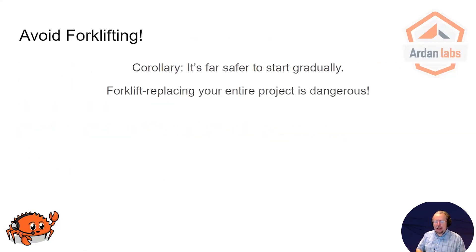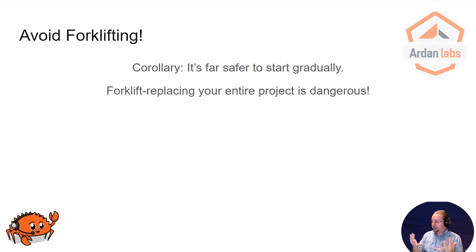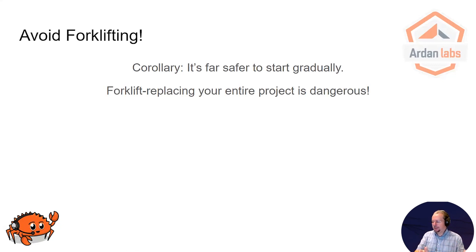As a corollary, I don't recommend — if you're relatively new to Rust — forklifting your entire system. I've seen companies do this and then usually regret it. Typically you want to replace parts of your system one at a time, carefully. Once you're sure this is the way you want to go, then by all means start replacing the big chunks. But you will have a much easier time explaining to a manager that you'd like to take a small risk than that you'd like to completely rewrite everything the company's done for the last X years.